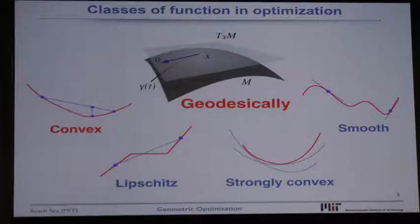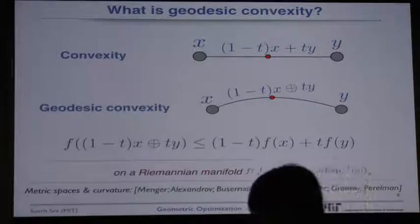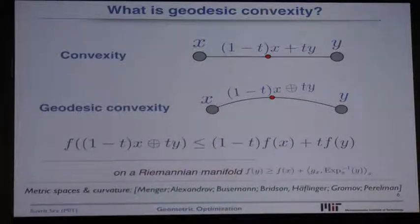Let me make that more precise. Here is my toy picture, which I always show. One of the ways to view Euclidean convexity is that you are in a space, you join two points x and y. You are in a linear space, so we join that by a straight line, parametrized by t, as t goes from 0 to 1. And the value of your function f along any point on that line is upper bounded by the average of the values of the function at the endpoints.